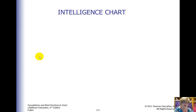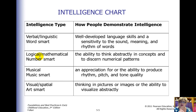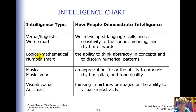The intelligence chart Gardner came up with identifies eight intelligence types. On the left side of your screen you can see four listed, with four more coming up shortly. The first is verbal-linguistic — word smart — a person who is well-developed in language skills and has sensitivity to the sound, meaning, and rhythm of words, like poetry or songs. Children can learn things through that.